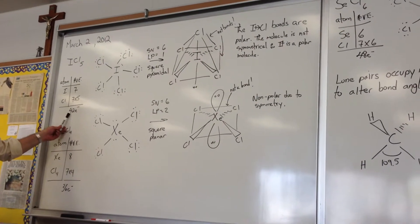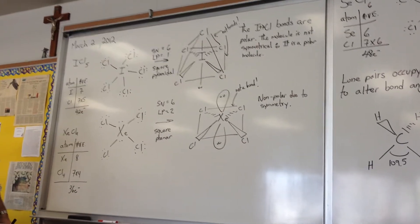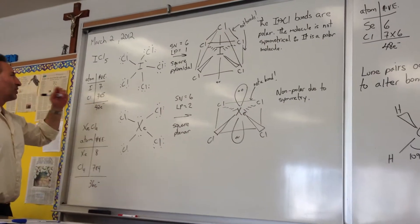We find out that ICL5 has 42 electrons in its structure, because iodine is 7 and chlorine is 7, with 5 chlorine atoms. So 6 times 7 is 42.